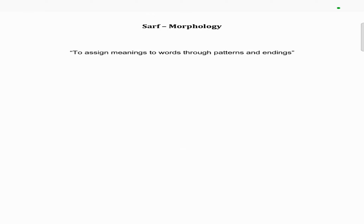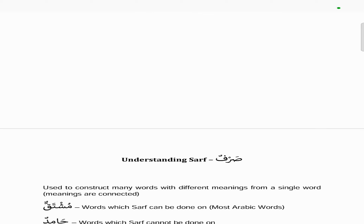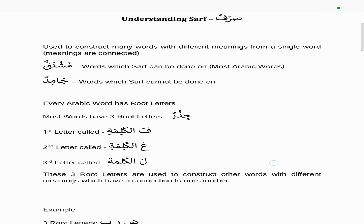We move on to the next chapter of our curriculum. Alhamdulillah, we've finished the first half of the curriculum which is Nahu, and now we can move on to the second half which is called Sarf — which in English is morphology. This means to assign meanings to words through patterns and endings. You take one word and from that one word you can make many different words, and that's what Sarf is.